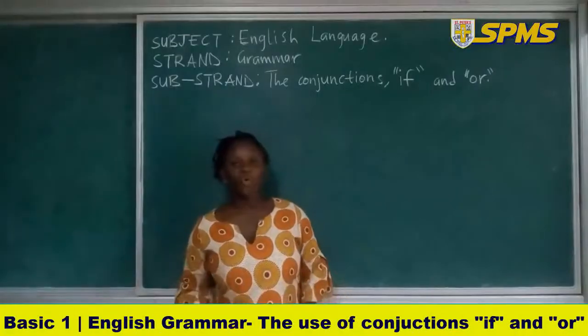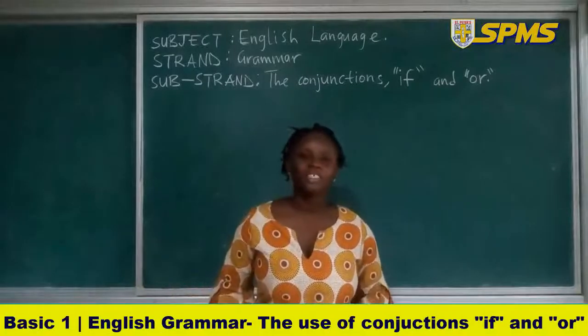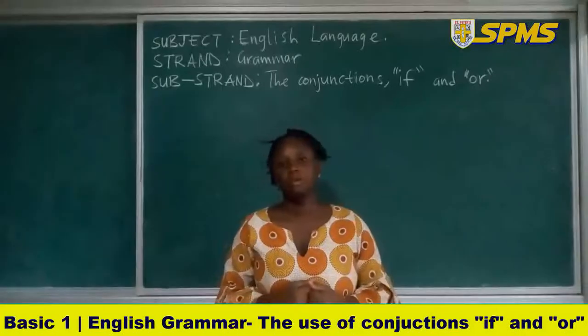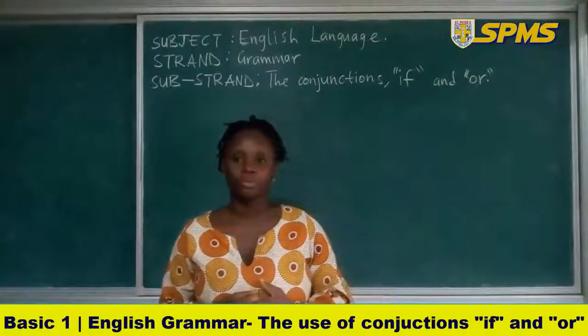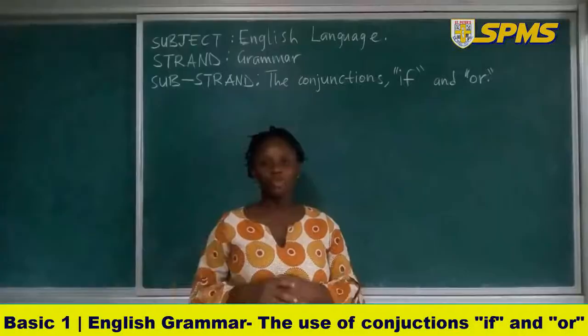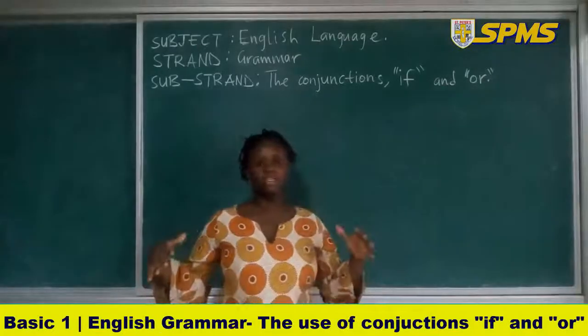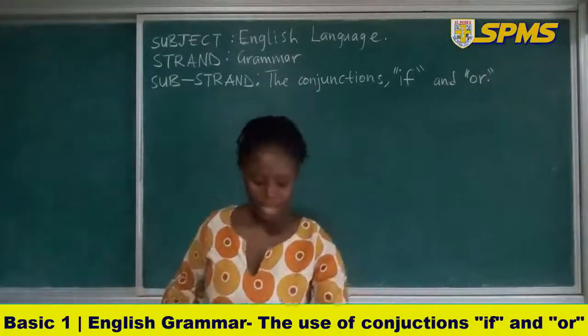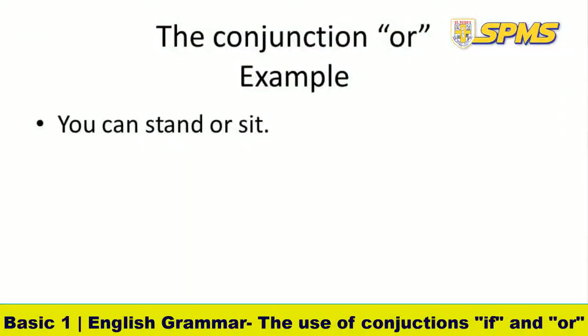Now let's look at the conjunction 'or'. The conjunction 'or' is used when you are choosing between two or more things. For example: we can eat pizza or burger — you are choosing between two things, either pizza or burger. Second example: you can sit or stand — you have two choices.